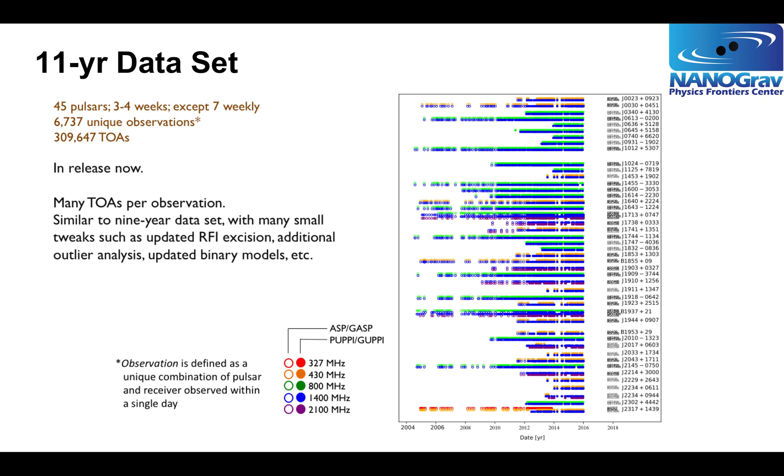Our next data set is the 11-year data set. It's a modest increase in the number of pulsars from 39 to 45. It's more than a 50% increase in the number of observations, up to 6,700 observations, and roughly a doubling of the number of pulse arrival times to 309,000. We tried to emulate what we did for the nine-year data set when we constructed the 11-year data set, but we did make many tweaks, cleaned up a lot of things based on what we had learned during the nine-year data set.